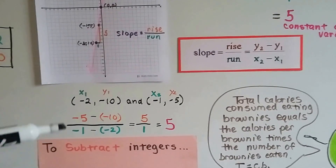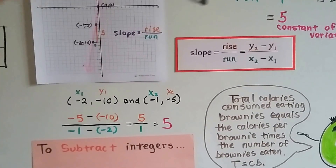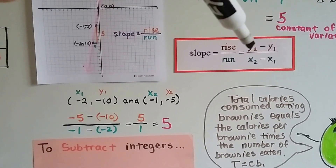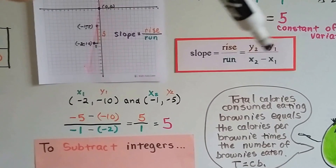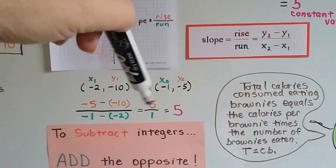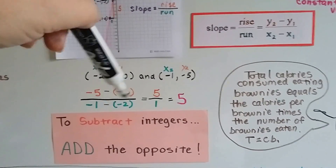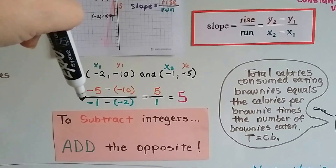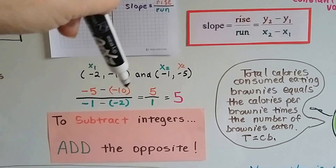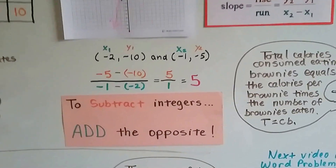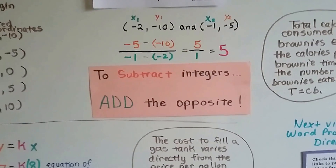You can also use the formula y2 minus y1 over x2 minus x1. Just remember to subtract integers by adding the opposite, so you'd have negative 5 plus 10, which gives you a positive 5.